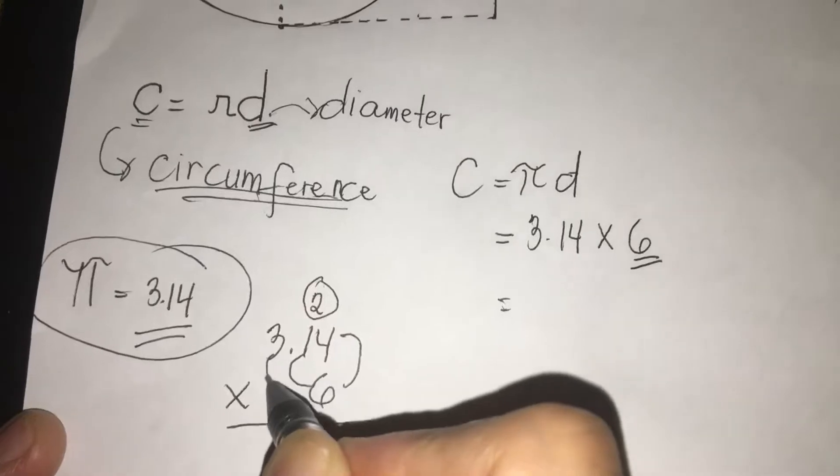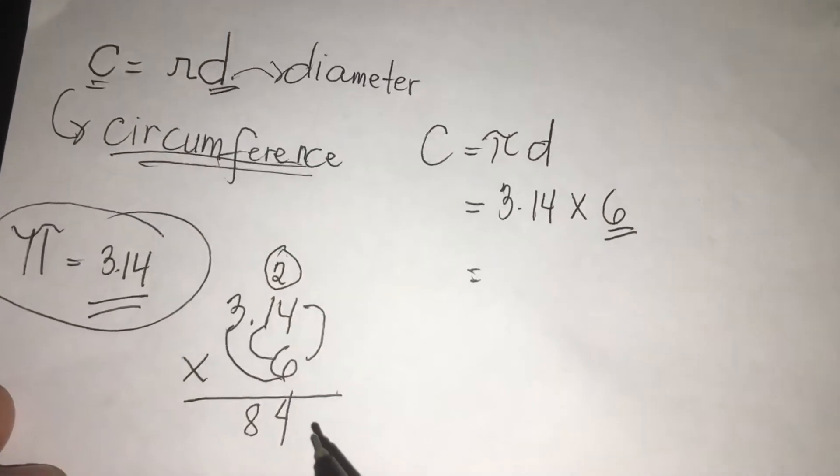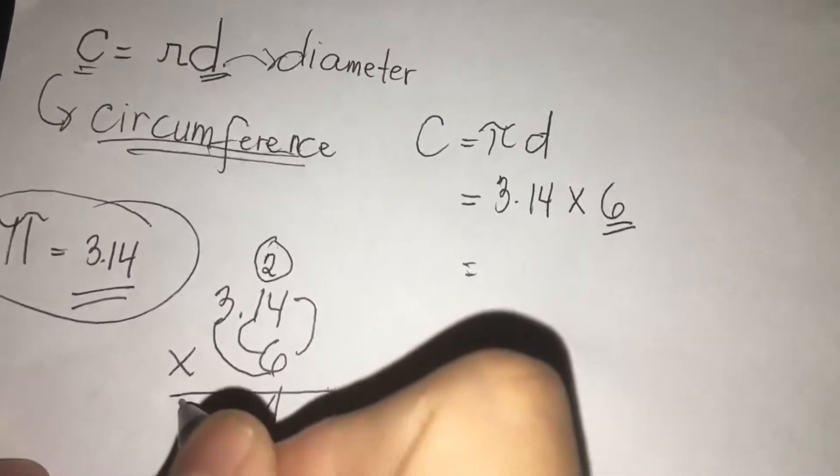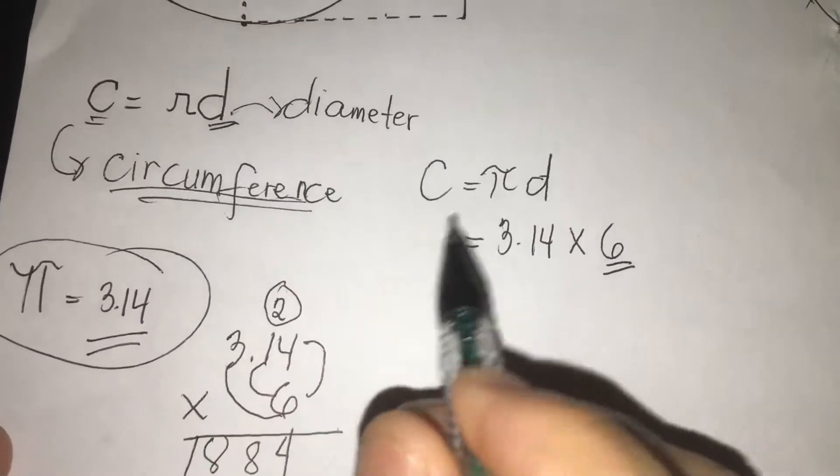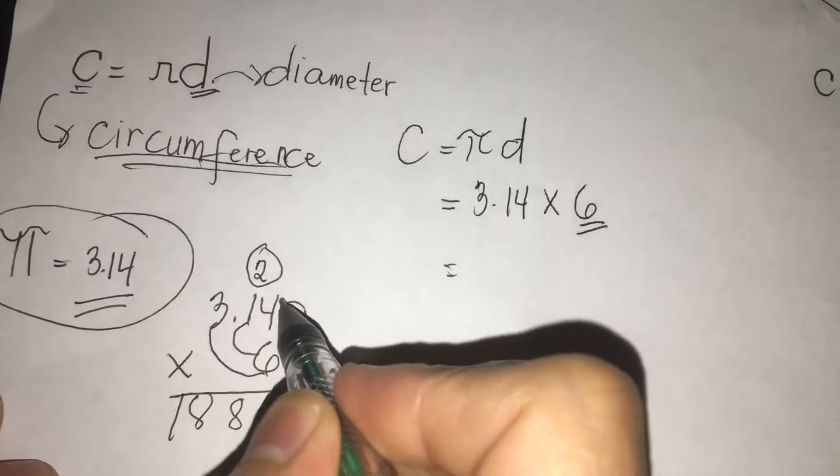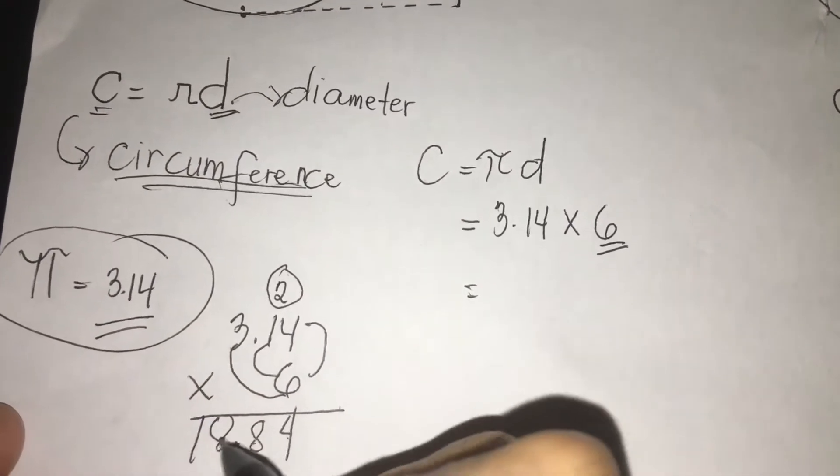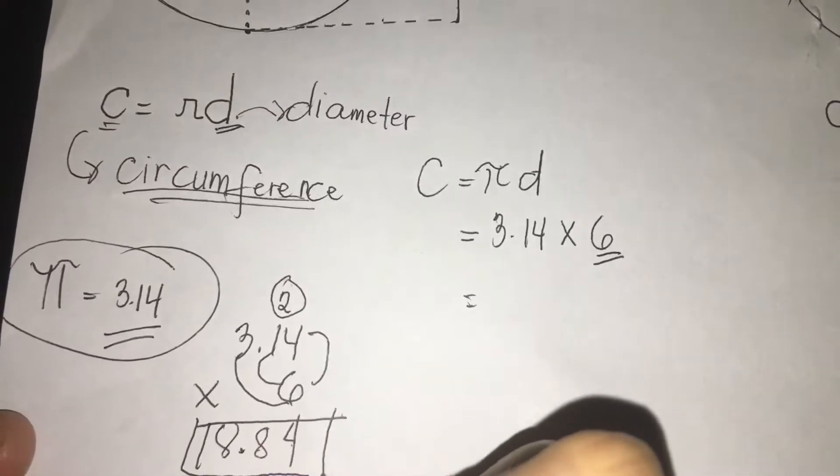Next is 3 times 6. We're going to write 18. Let's count first here, putting the decimals: 1, 2, 1, 2. So the answer is 18.84.